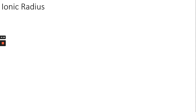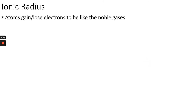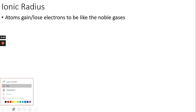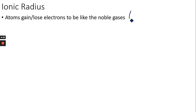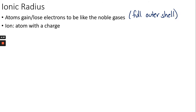Ionic radius is the size of an ion. Atoms gain or lose electrons to be like the noble gases, which have a full outer shell — full valence shell — or eight valence electrons. That is the whole reason atoms gain and lose electrons. An ion is what we call the atom after it has gained or lost electrons.